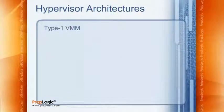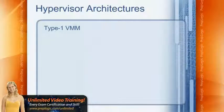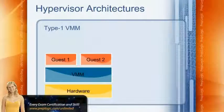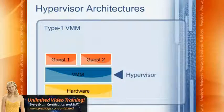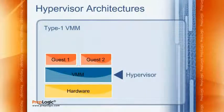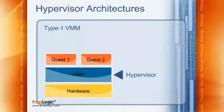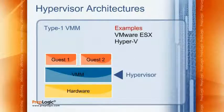Finally, we have the Type 1 Virtual Machine Manager — the ideal implementation. Looking at the graphic, we have our hardware and then the virtual machine manager directly on top — that's it. There is no host OS. This virtualization layer, called the hypervisor, runs directly on the hardware, and guest operating systems run on top of that. It gives us better performance and stability. Examples include VMware ESX, ESXi, and Hyper-V.